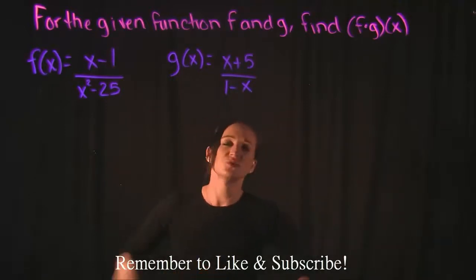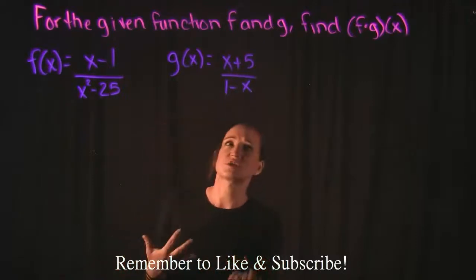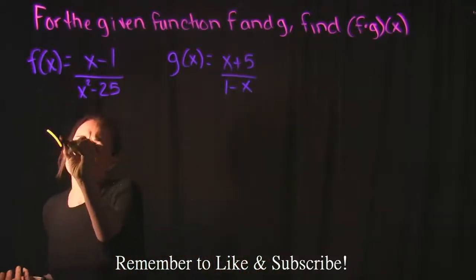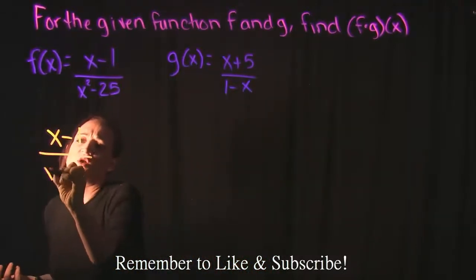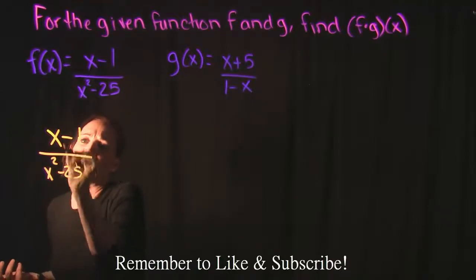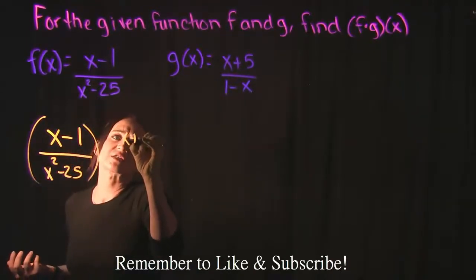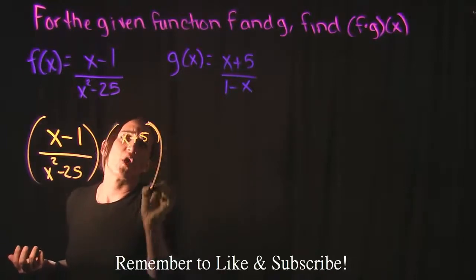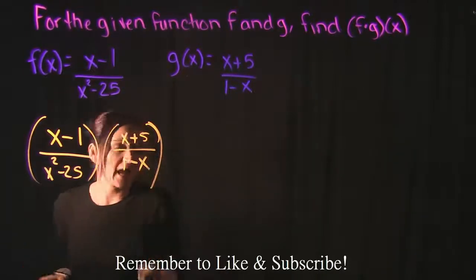So essentially, all you're wanting us to do is multiply these two things together. Take f of x, multiply it times g of x. So they want us to take x minus 1 over x squared minus 25, and we're going to multiply that by x plus 5 over 1 minus x.